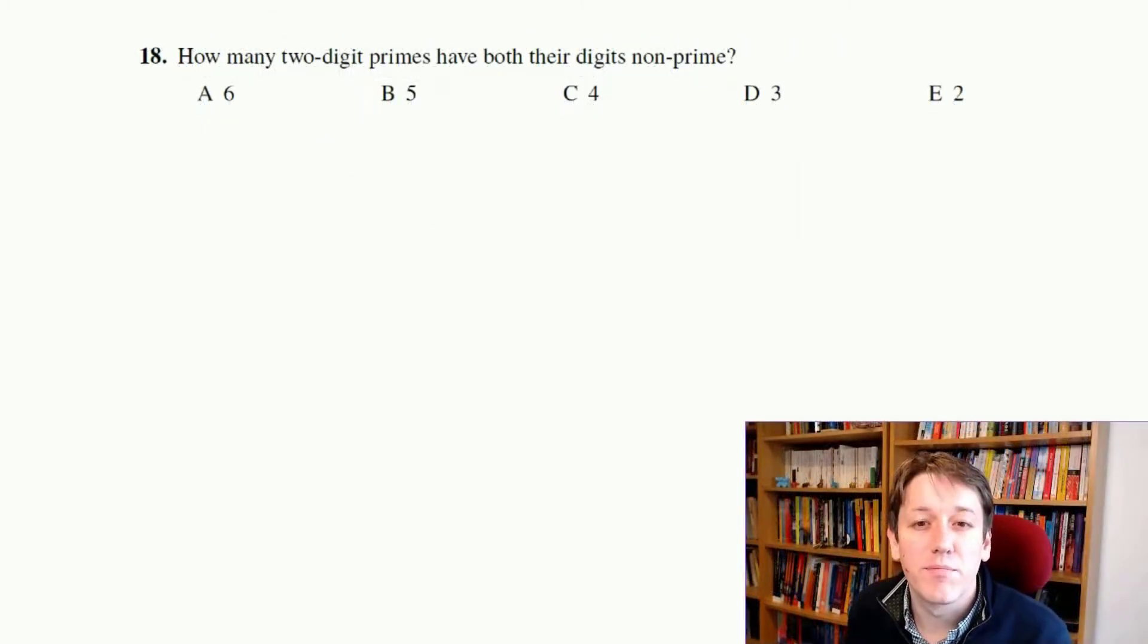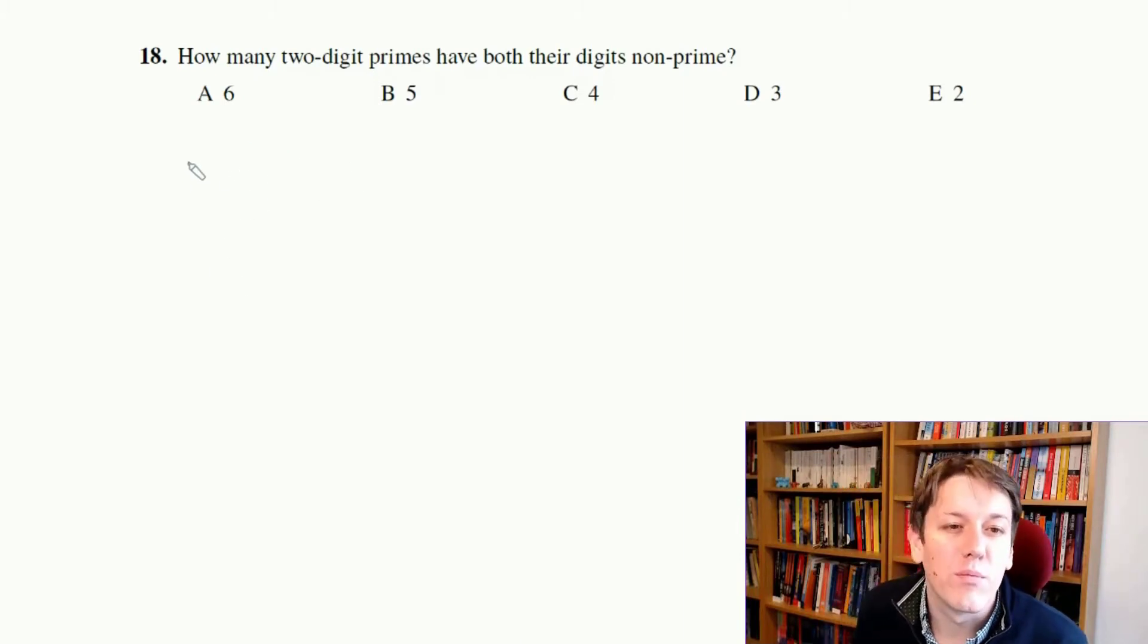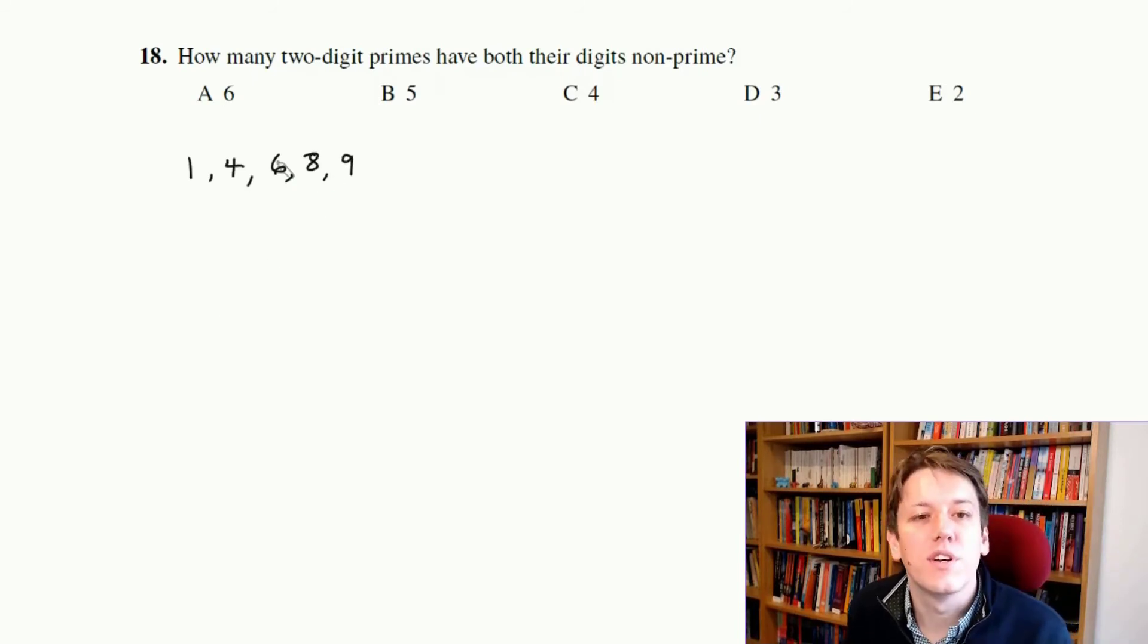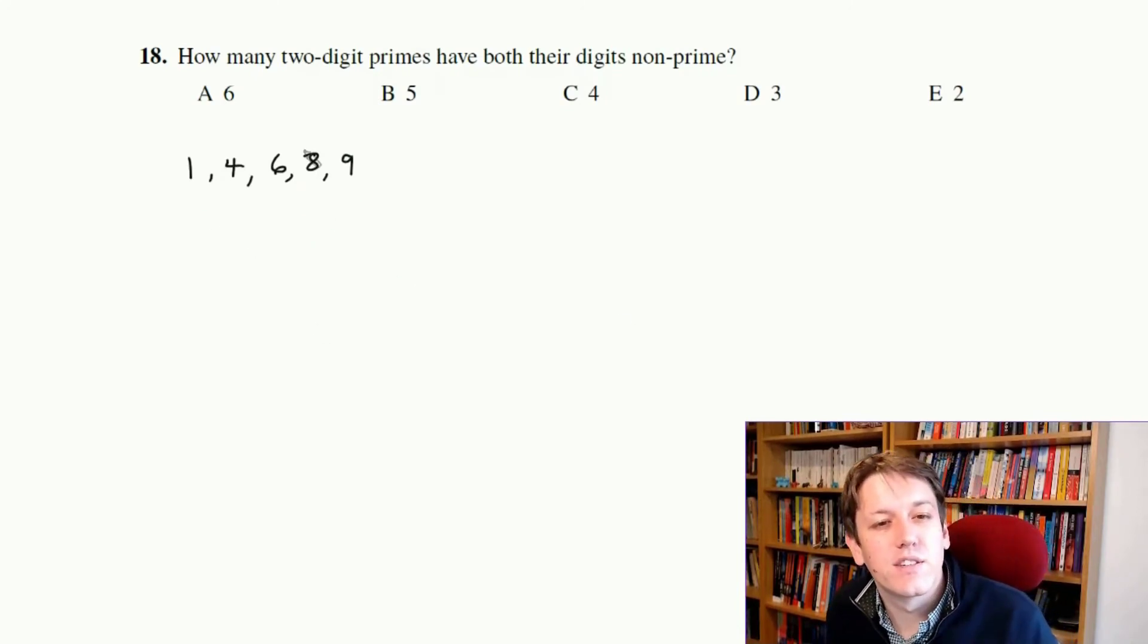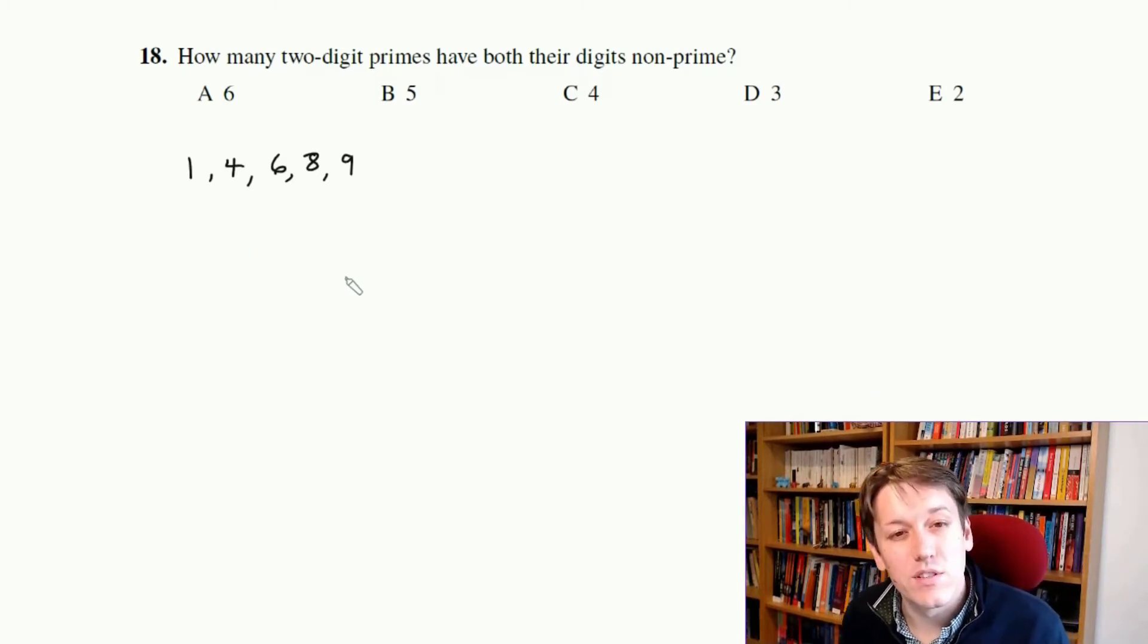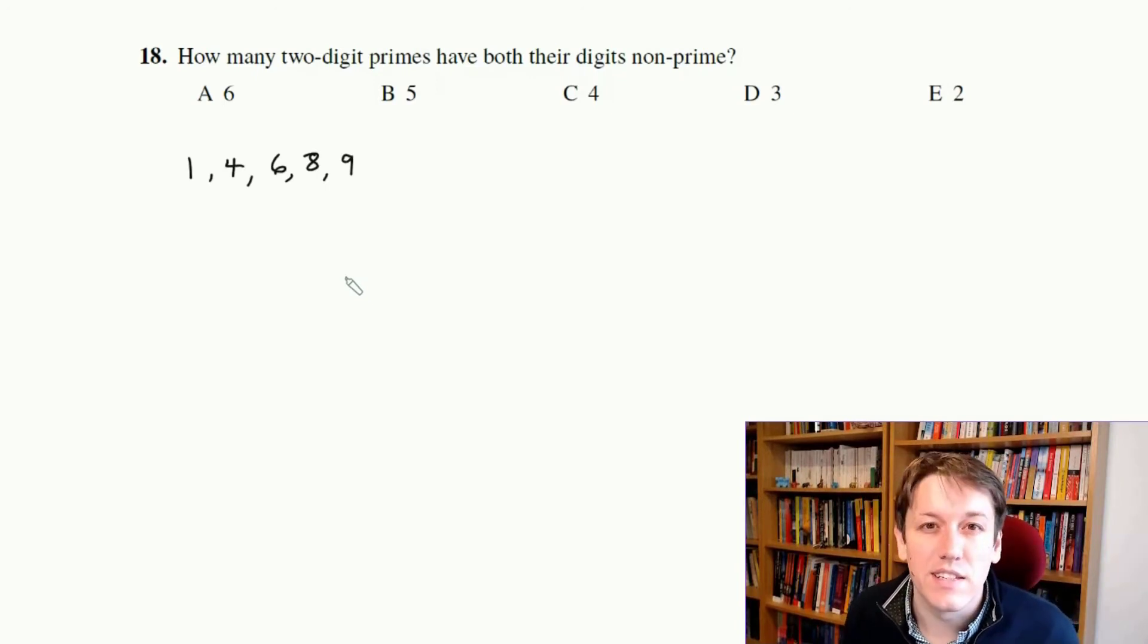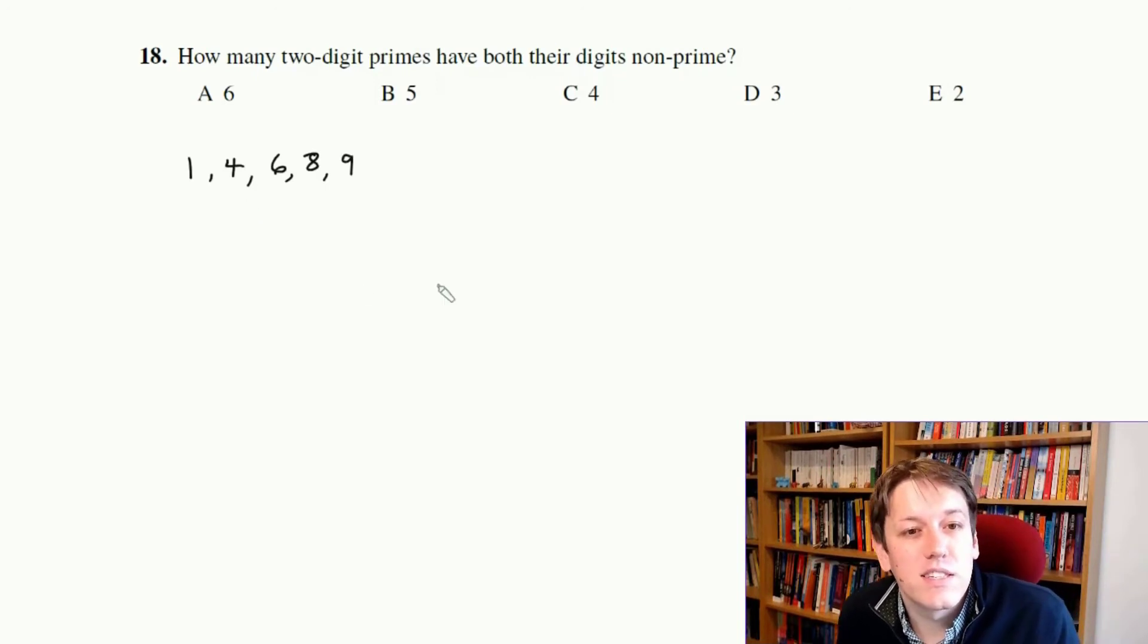How many two-digit primes have both of their digits not prime? Okay, so which digits are not prime? Well, 1 is not prime, 2 is, 3 is, 4 is not prime, 5 is prime, 6 is not, 7 is prime, 8 is not, and 9 is not. So it's actually saying how many two-digit primes can we make up from these numbers? So let's narrow it down. And remember, for a two-digit prime, we've only got to check whether 2, 3, 5, and 7 are factors or not. I go through that in detail about why that's true in the full course, go for gold in the Junior Maths Challenge. So I'm just going to check these out here.